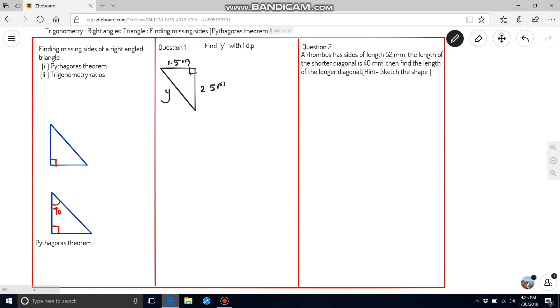Hello everyone, here we are learning how to find missing sides of a right angle triangle by using Pythagoras theorem and trigonometrical ratios. In part 1, we are using Pythagoras theorem.